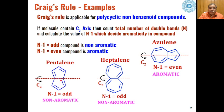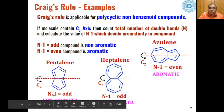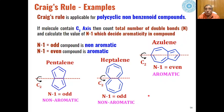For pentalene, which also has C2 symmetry, total N is 4 — so 4 minus 1 equals 3, which is odd — meaning pentalene is non-aromatic by Craig's Rule. For heptalene, C2 symmetry is present and the number of double bonds is 6 — so 6 minus 1 equals 5, which is odd — making heptalene also non-aromatic. On the basis of C2 symmetry in polycyclic non-benzenoid compounds, we can easily determine whether a compound is aromatic or non-aromatic. However, Craig's Rule cannot tell us whether a compound is anti-aromatic.